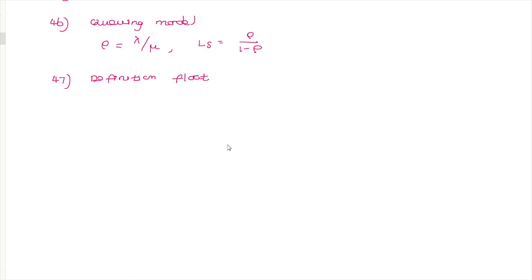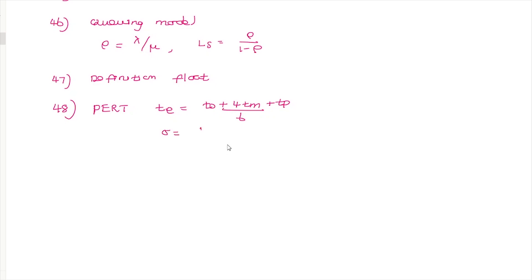The critical path question covers the definition of float — specifically total float versus free float. PERT expected time is calculated as: Te = (To + 4Tm + Tp) / 6, where To is optimistic time, Tm is most likely time, and Tp is pessimistic time. Standard deviation is also calculated from these values.